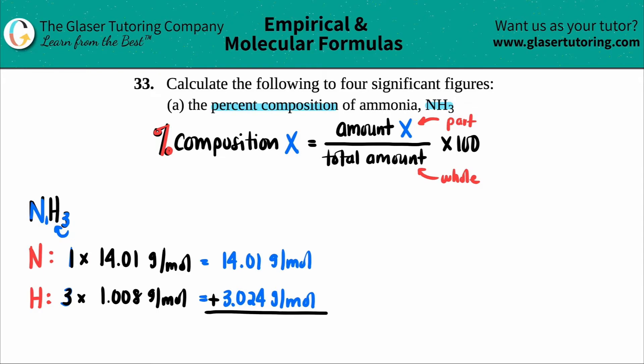3.024. Okay. So the total molar mass for NH3 is 17.034 grams per mole. And that's the total.